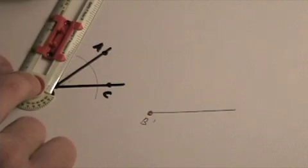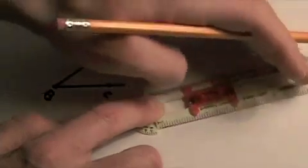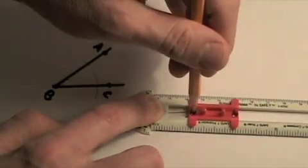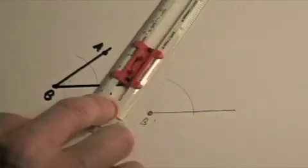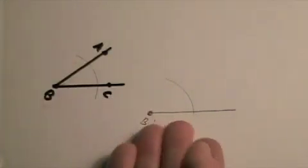Don't change your slider. Move your compass over onto B prime and do the same motion. Just remember to remind yourself that you're copying. So whatever you do on here, you'll do the same thing over here.